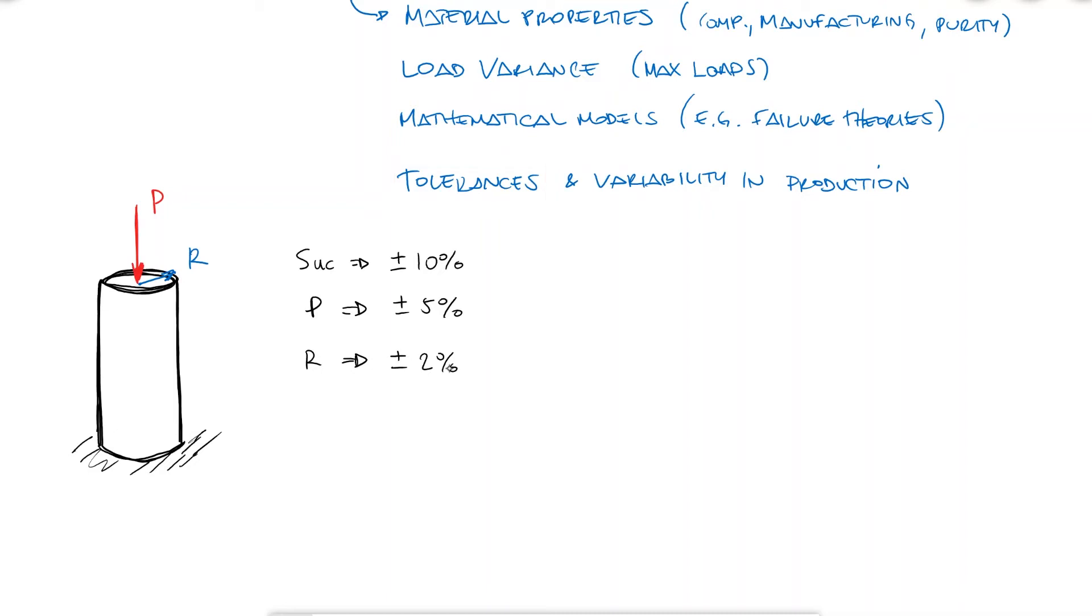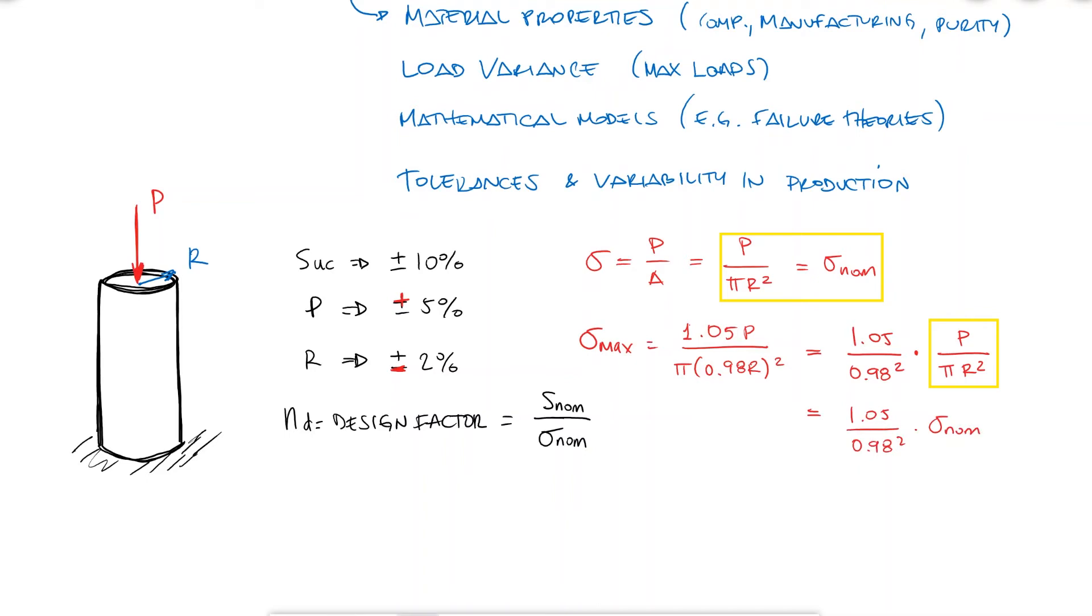Both the design factor and the factor of safety are defined by the ratio between the strength and the stress, and specifically for the design factor we call these nominal. In this simple compression example, my normal stress would be equal to load over area from axial loading. To find a design factor, I'm going to consider the worst case scenario, where my stress is maximum and my strength is minimum. My maximum normal stress occurs when the load is highest and the cross section area is lowest, which is equal to 1.05 over 0.98 squared times the nominal stress. If I consider the worst case scenario for the strength of the material, I would find that the ultimate compressive strength is 10% less than I expected it to be. In that worst case scenario, my maximum stress cannot be higher than the minimum strength or else the component will fail. From this expression, I can solve for the nominal strength over the nominal stress, which is exactly what I defined as design factor.